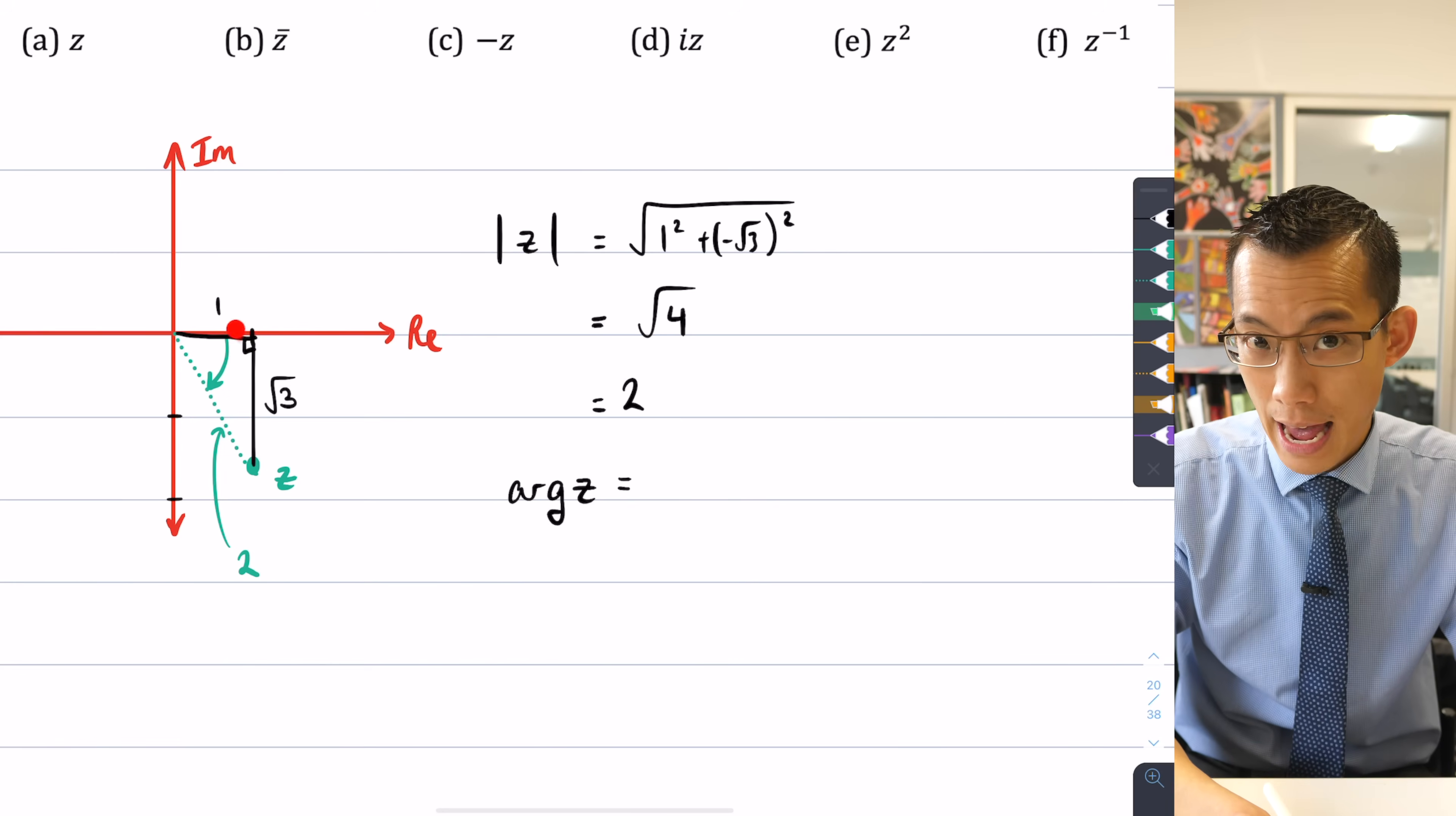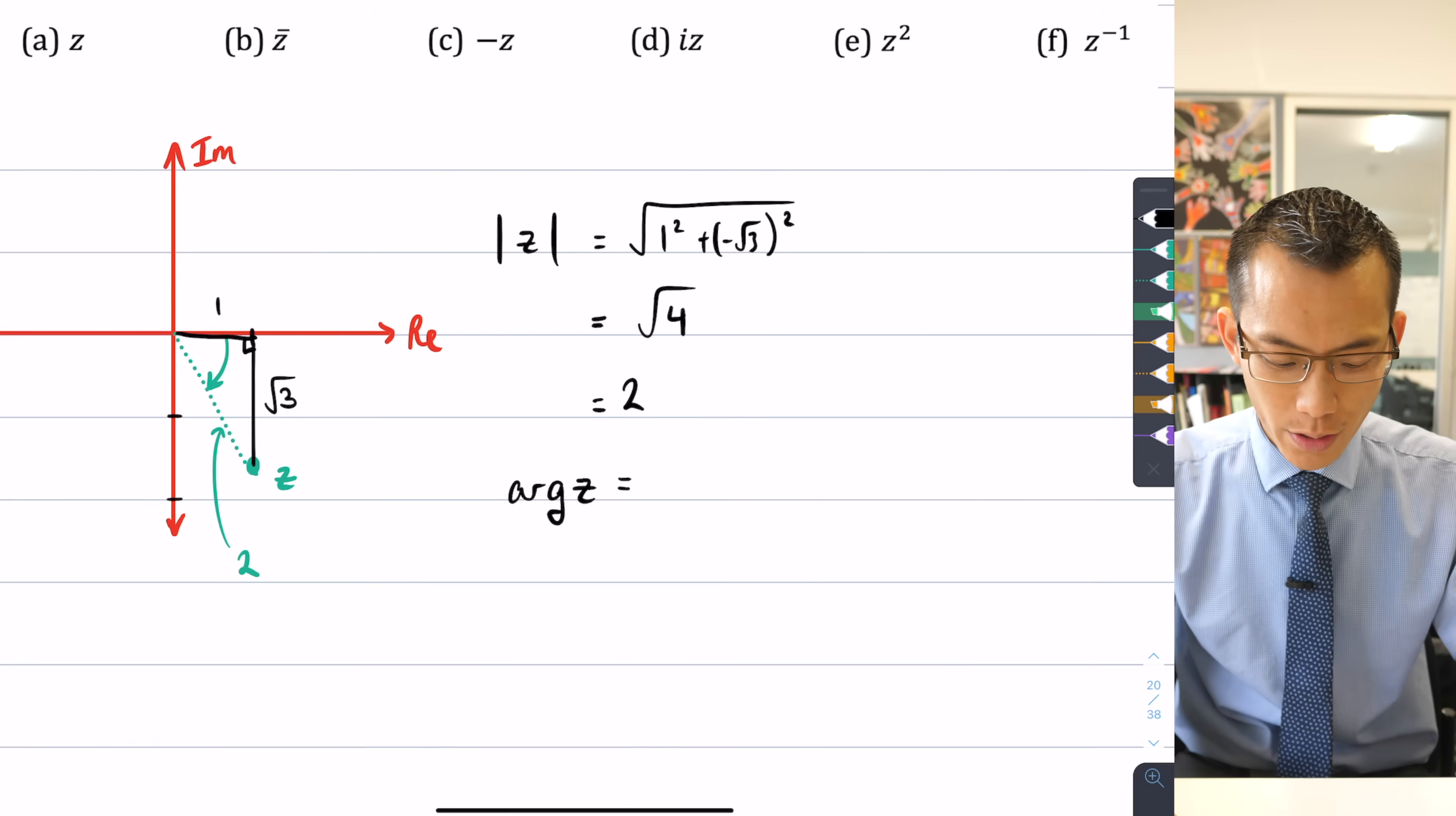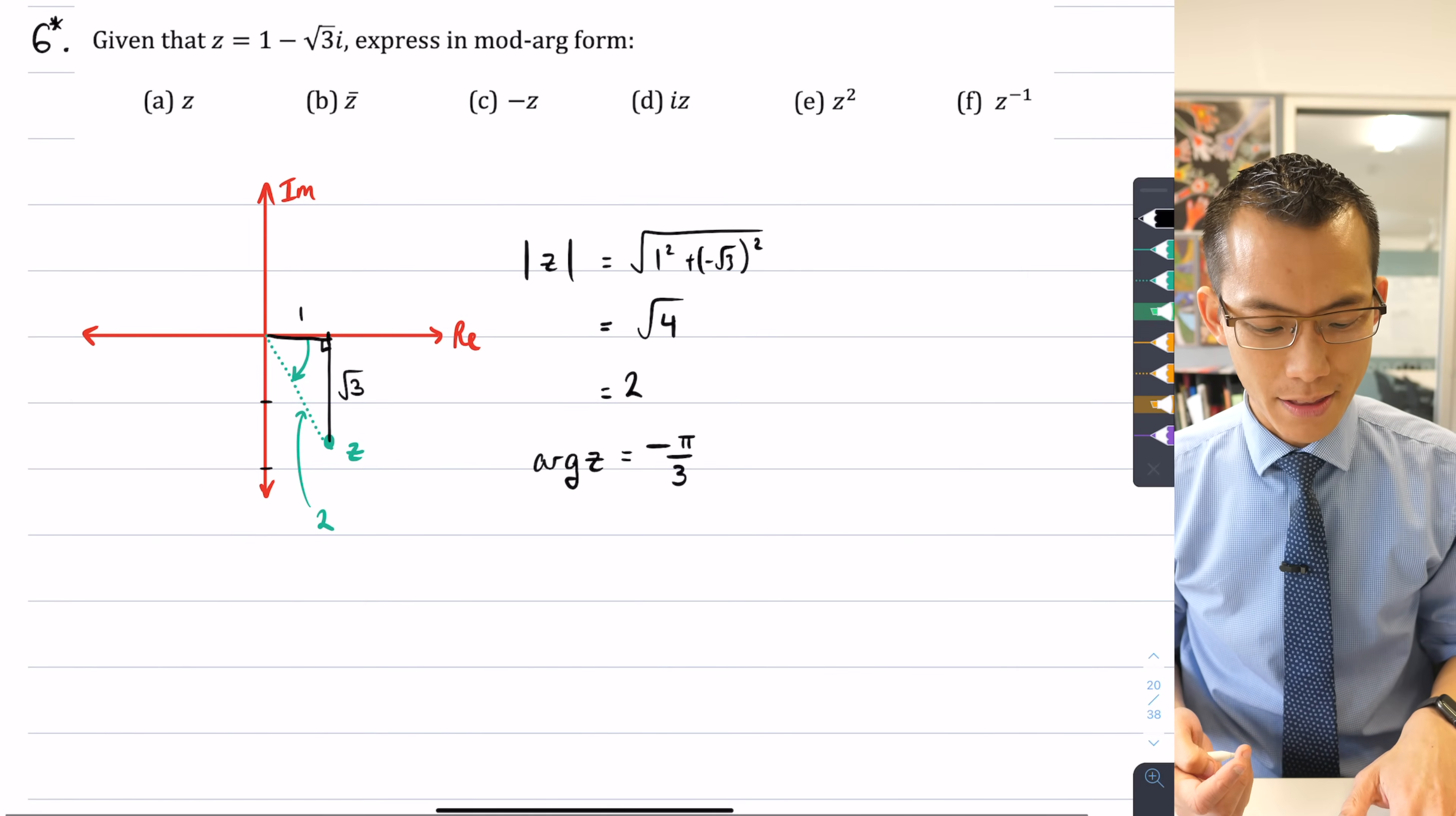I wouldn't be going down to where z actually is. So the way we would say this is to say that arg z is going to be -π/3 and that's the direction it's gone in. Clockwise is negative in this scheme.